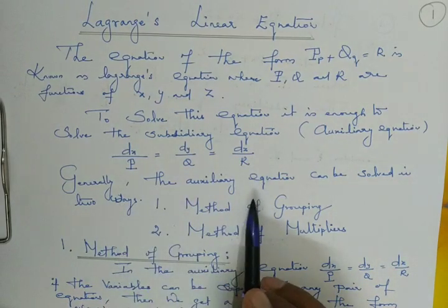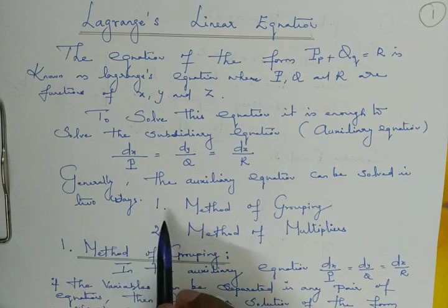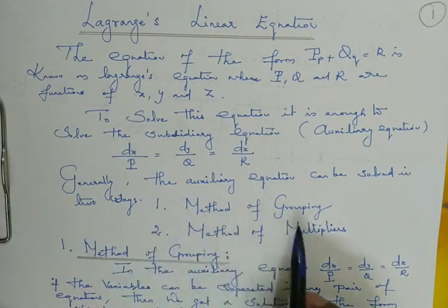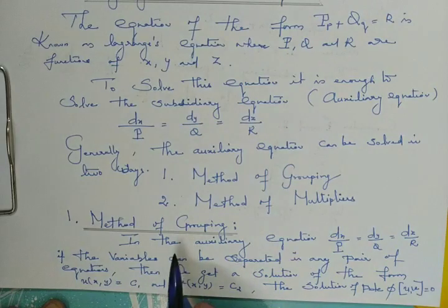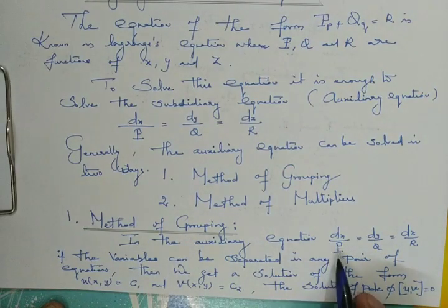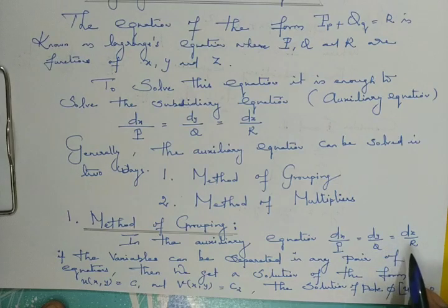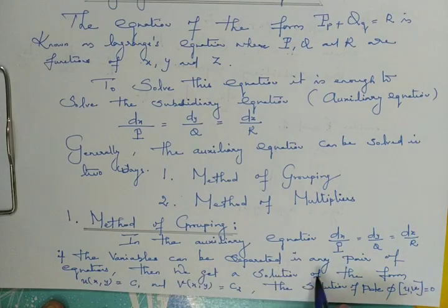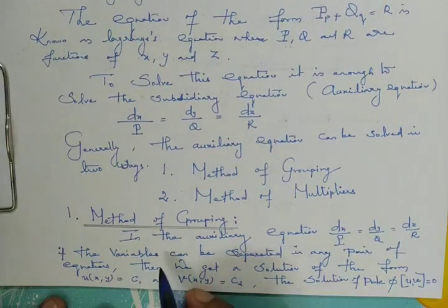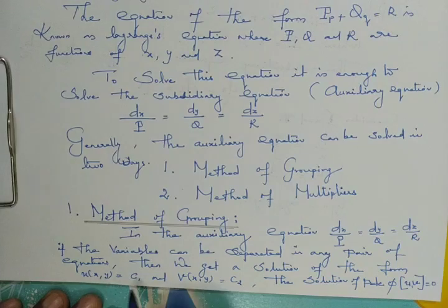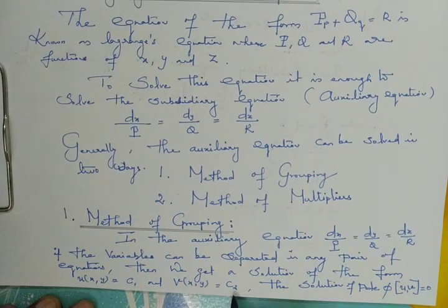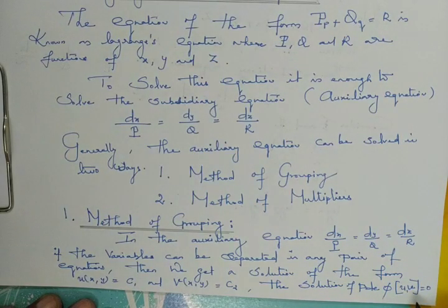Generally, the auxiliary equation can be solved in two ways: the method of grouping and the method of multipliers. In the auxiliary equation dx/P = dy/Q = dz/R, if the variables can be separated in any pair of equations — you can select pair 1 and 2, or 2 and 3, or 1 and 3 — then we get a solution of the form u(x,y) = c₁ and v(x,y) = c₂. The solution of the PDE is then φ(u, v) = 0.